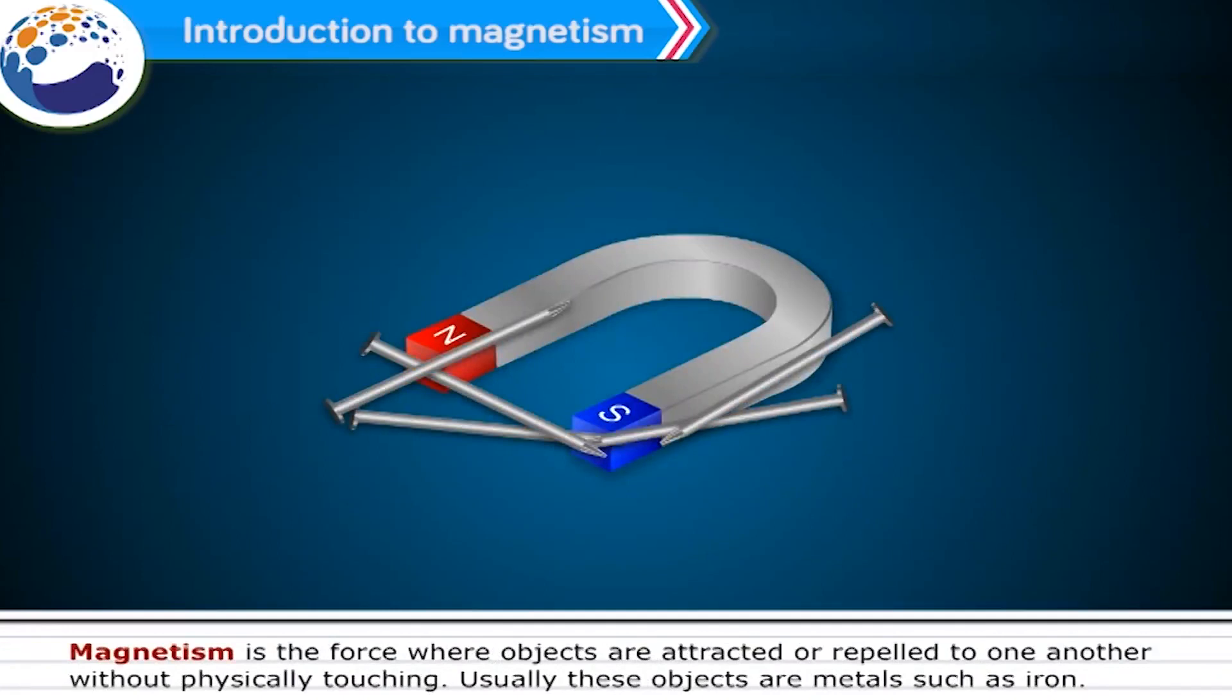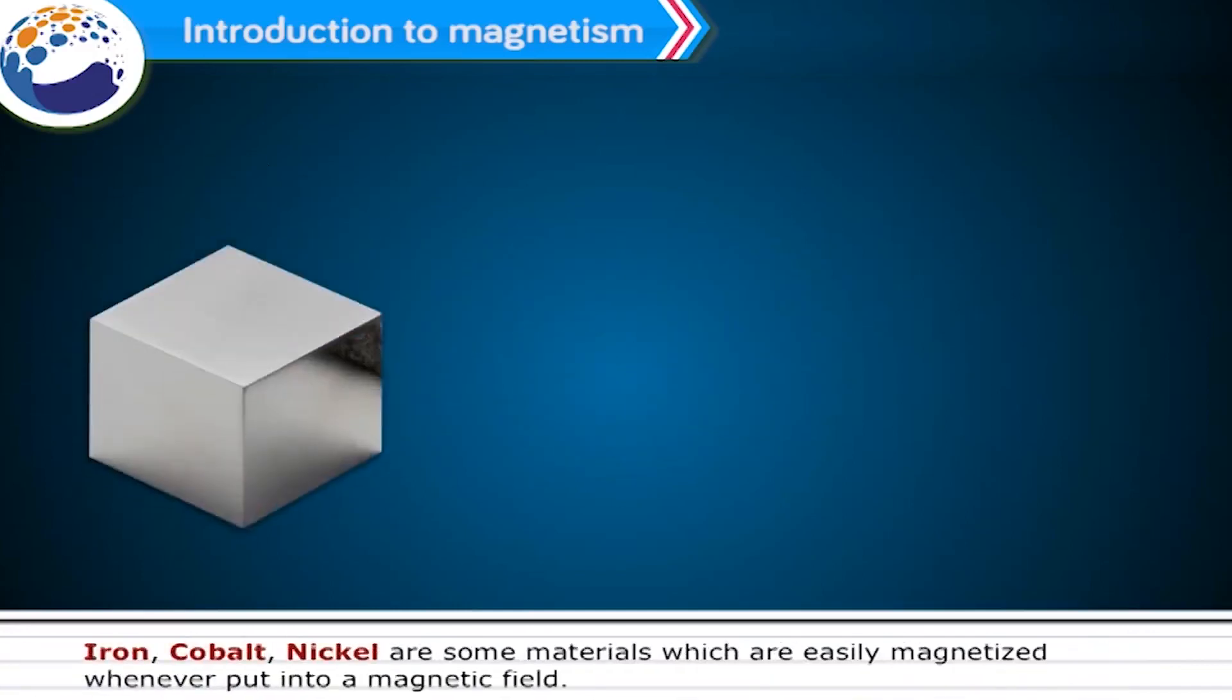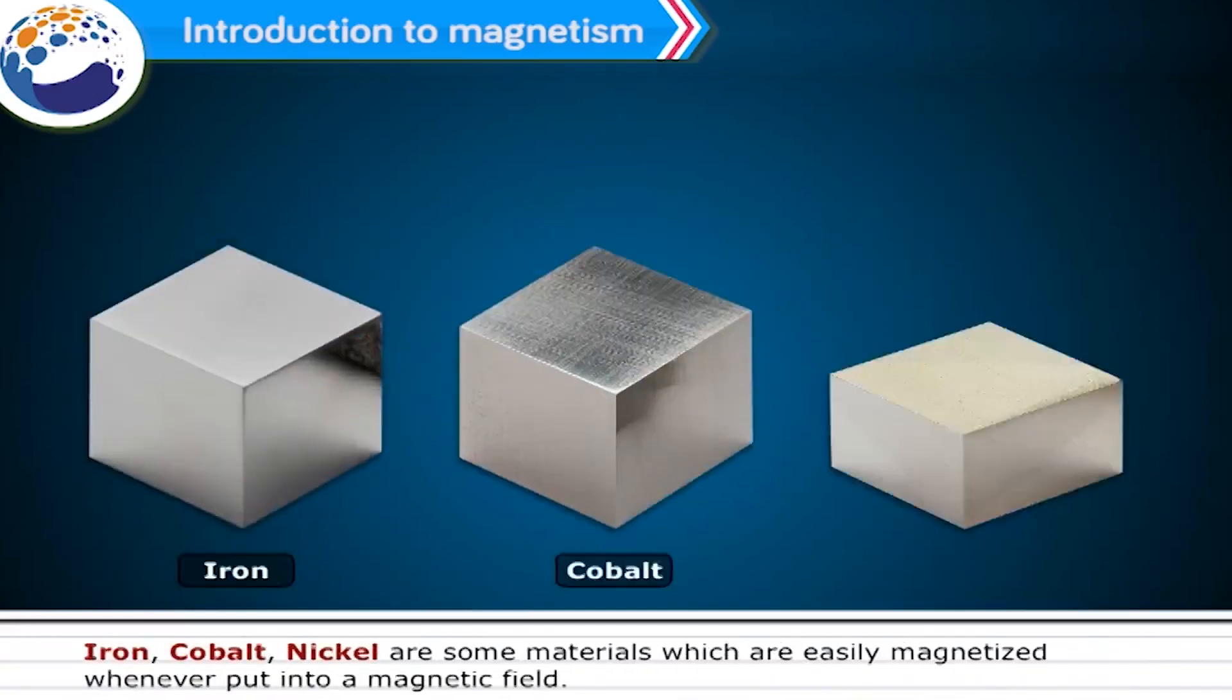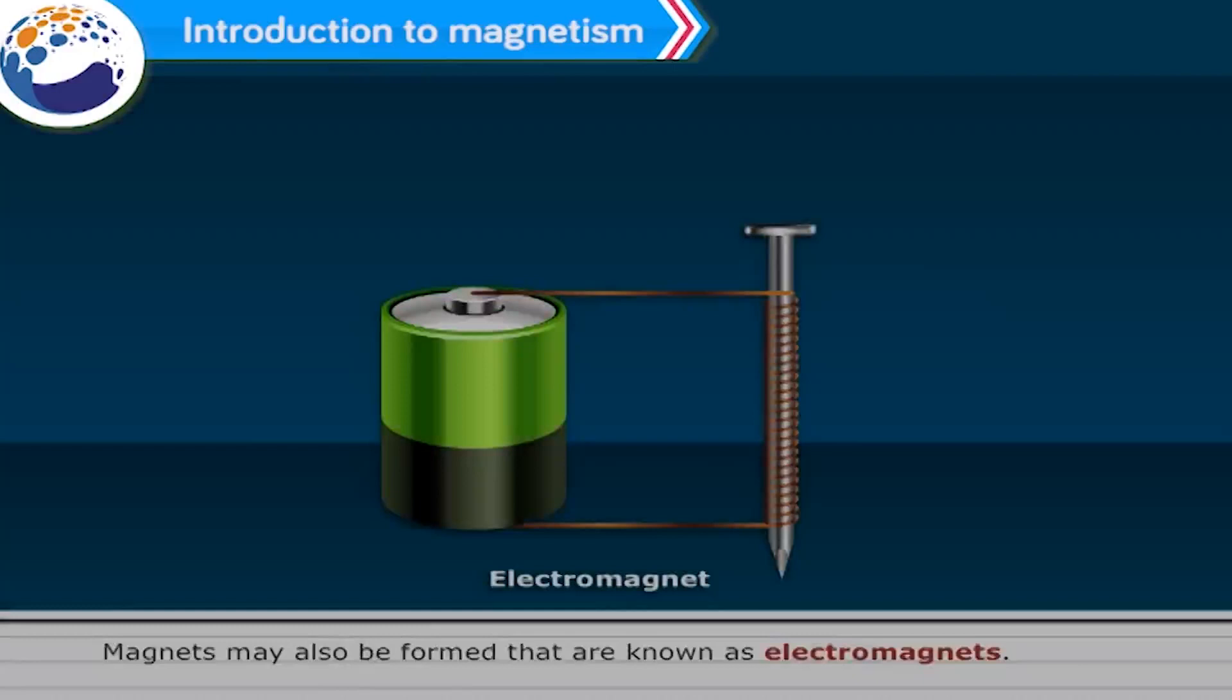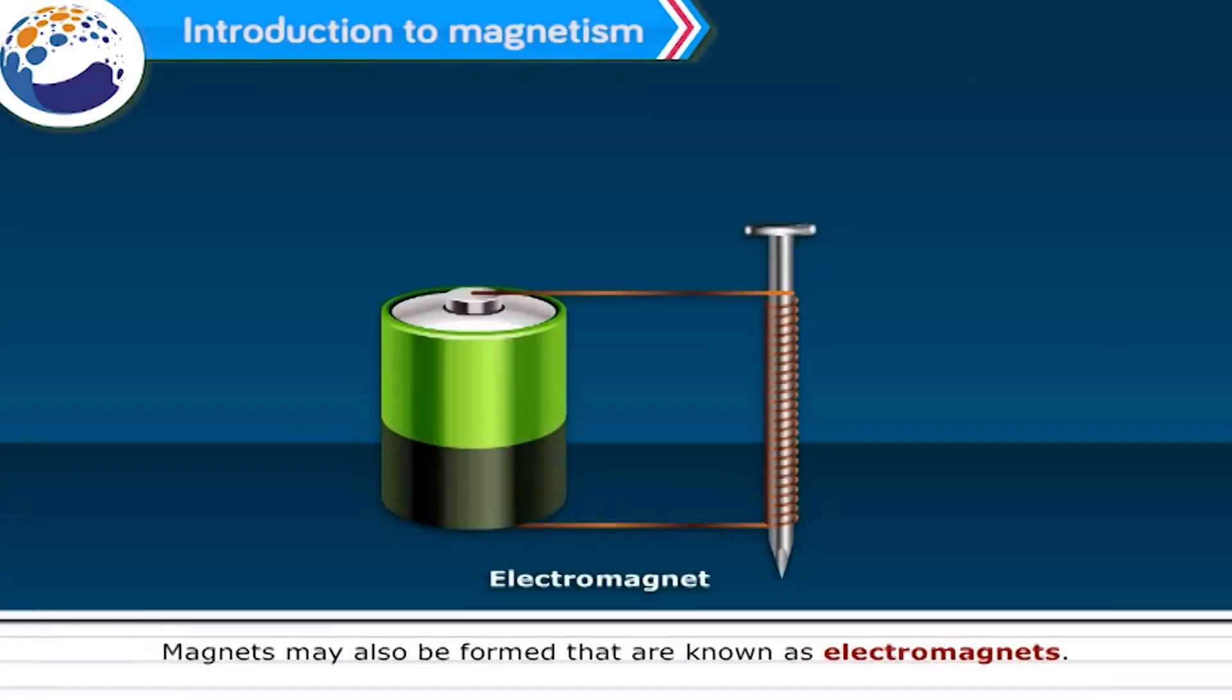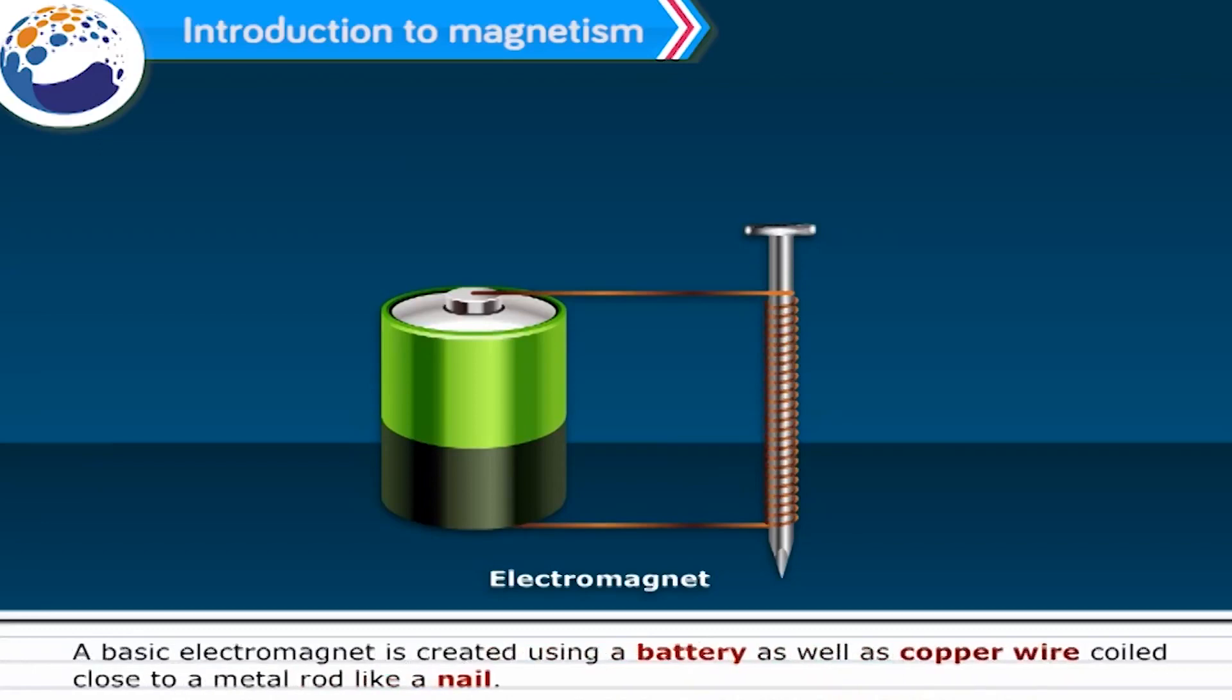Magnetism is the force where objects are attracted or repelled to one another without physically touching. Usually these objects are metals such as iron. Iron, cobalt, nickel are some materials which are easily magnetized whenever put into a magnetic field. Magnets may also be formed that are known as electromagnets. A basic electromagnet is created using a battery as well as copper wire coiled close to a metal rod like a nail.